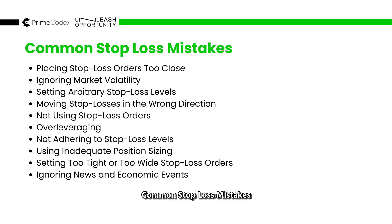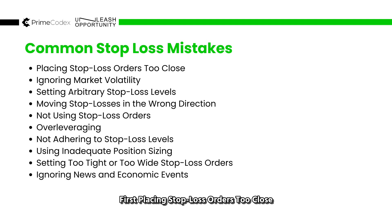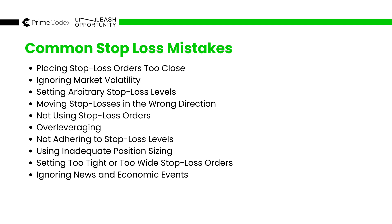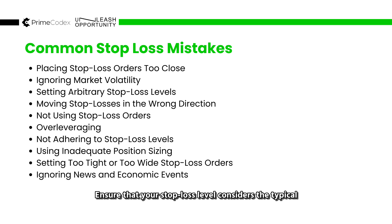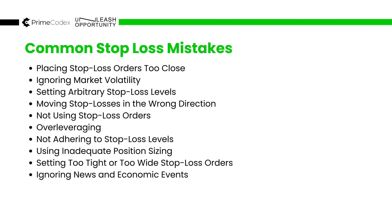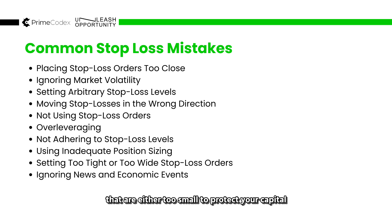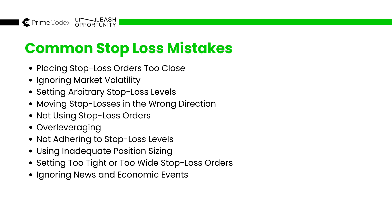Common stop loss mistakes. The first is placing stop loss orders too close to the entry point. This can result in the orders being triggered by normal market fluctuations, leading to premature exits from trades. Ensure that your stop loss levels account for the typical volatility of the currency pair you're trading. The next is ignoring market volatility — different currency pairs exhibit varying levels of volatility. Failing to consider this volatility when setting your stop loss can lead to losses that are either too small to protect your capital or too large to manage effectively. Use historical price movements to gauge the appropriate distance for your stop loss.